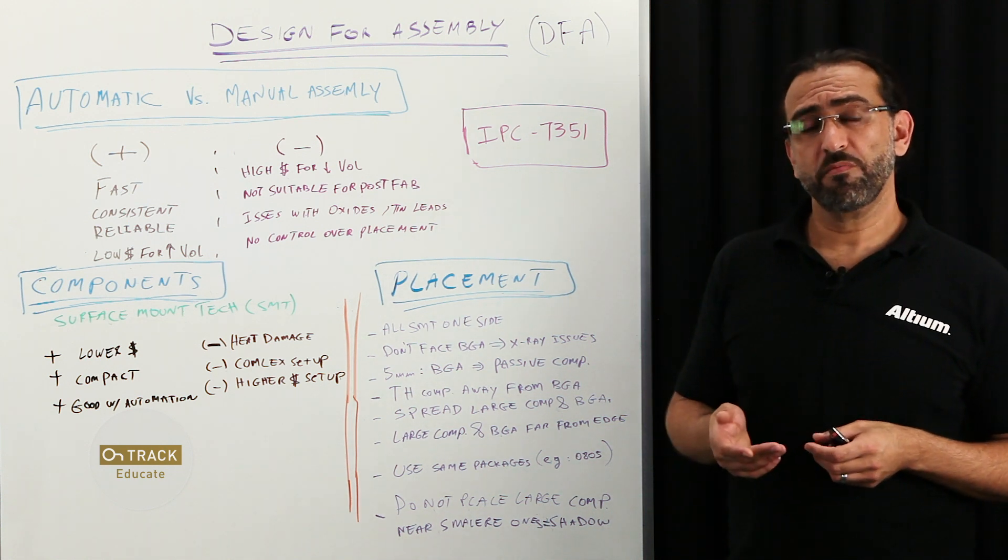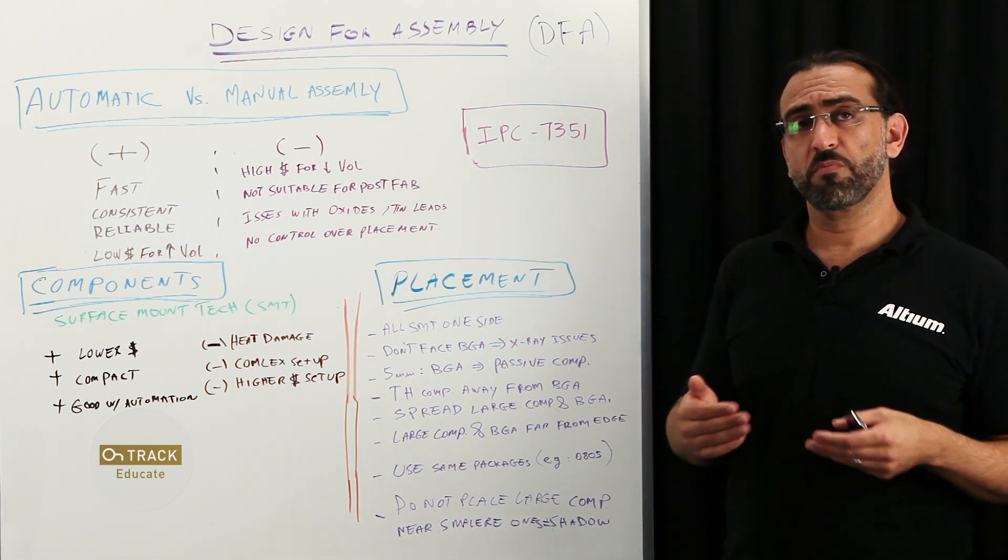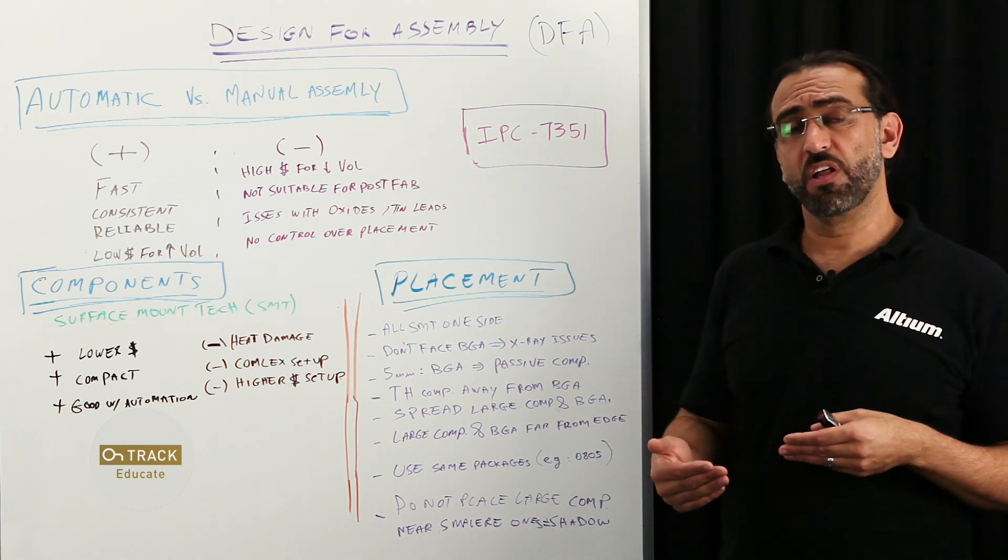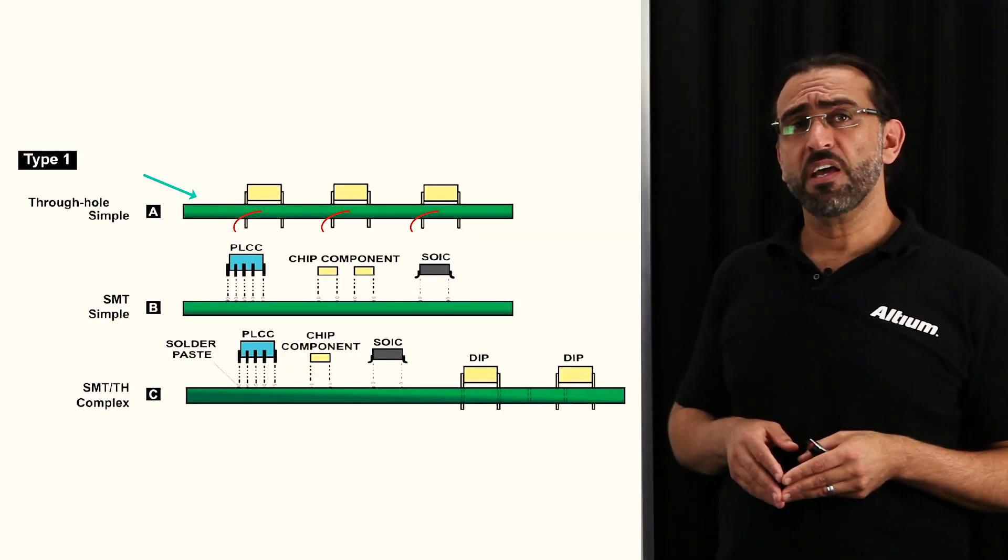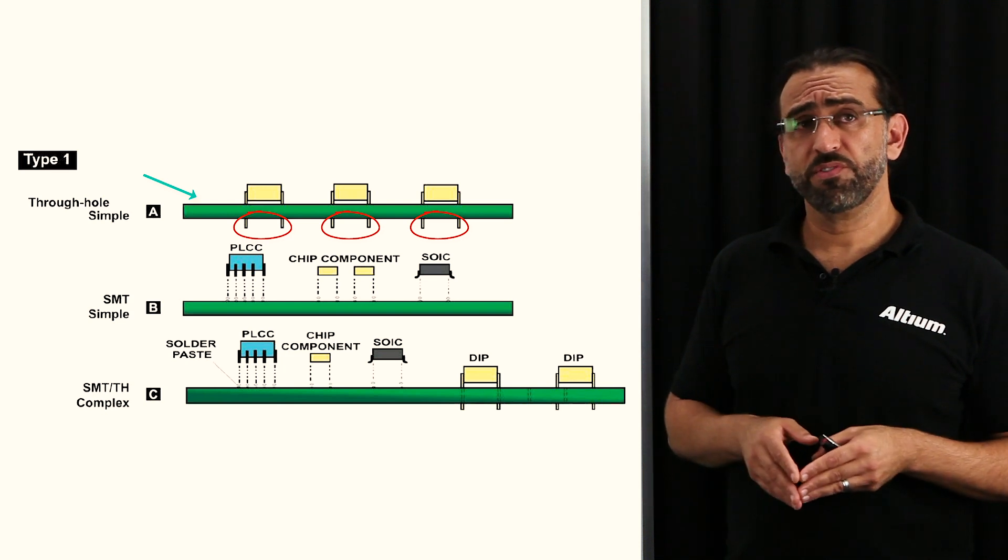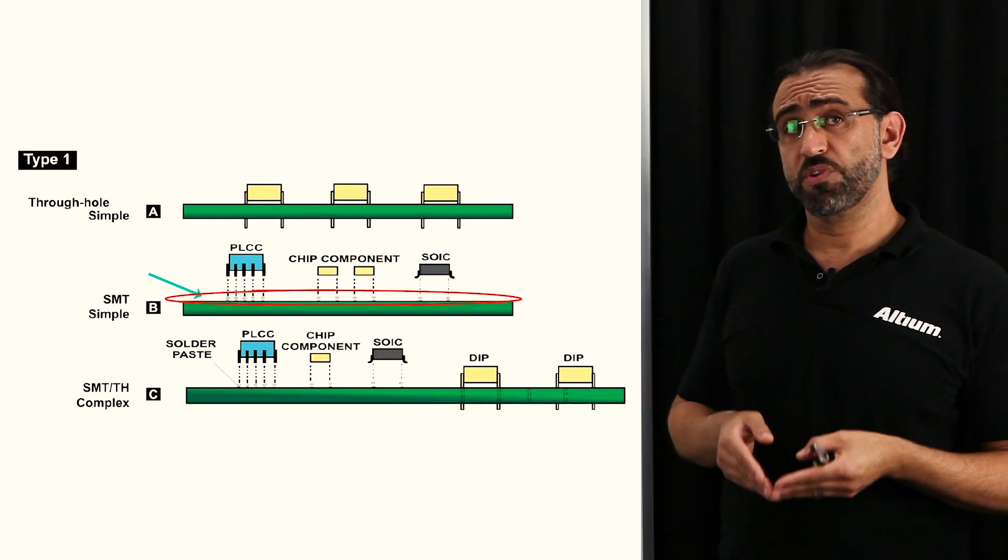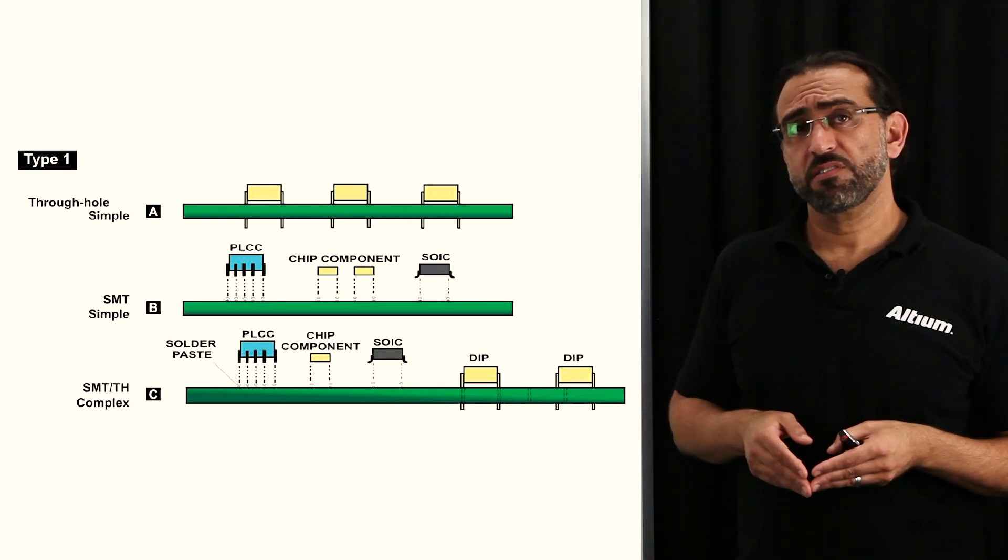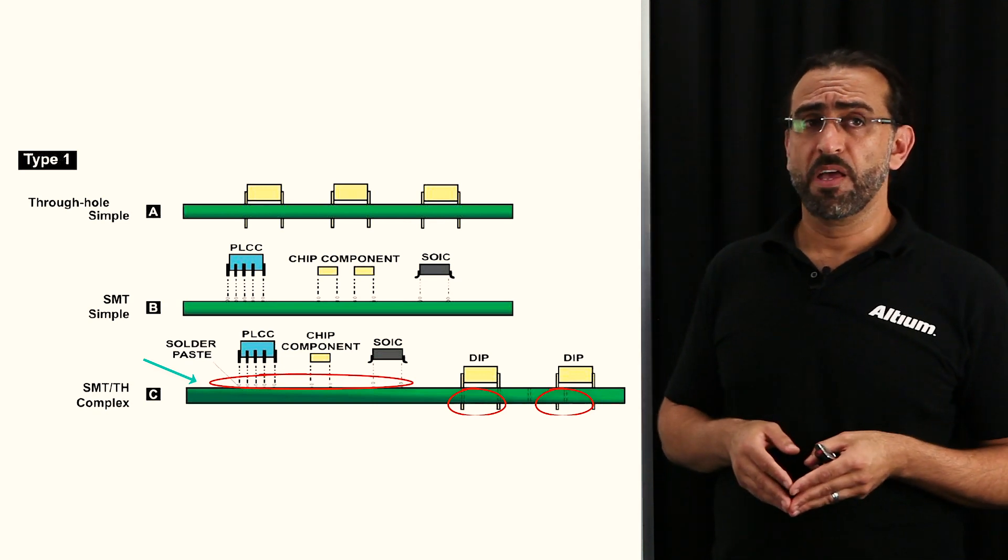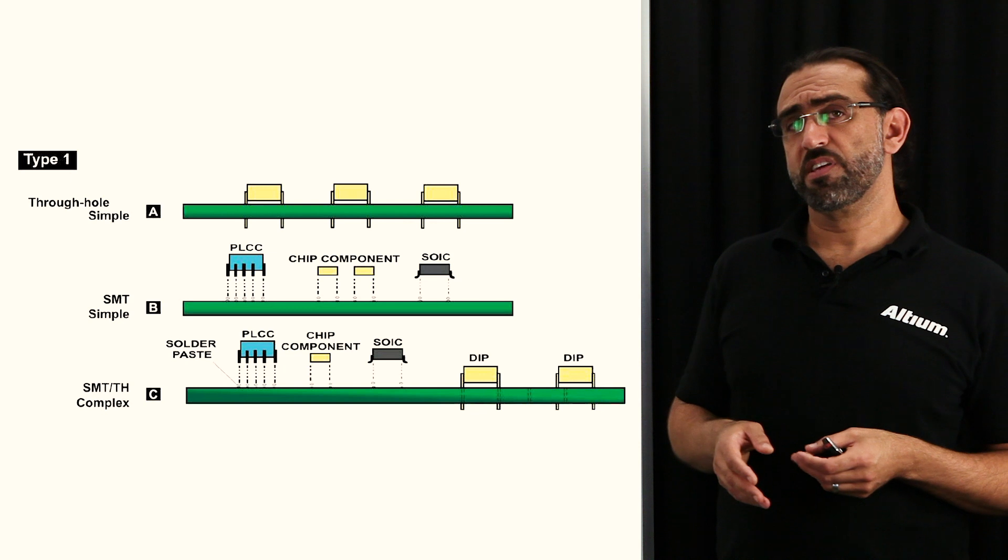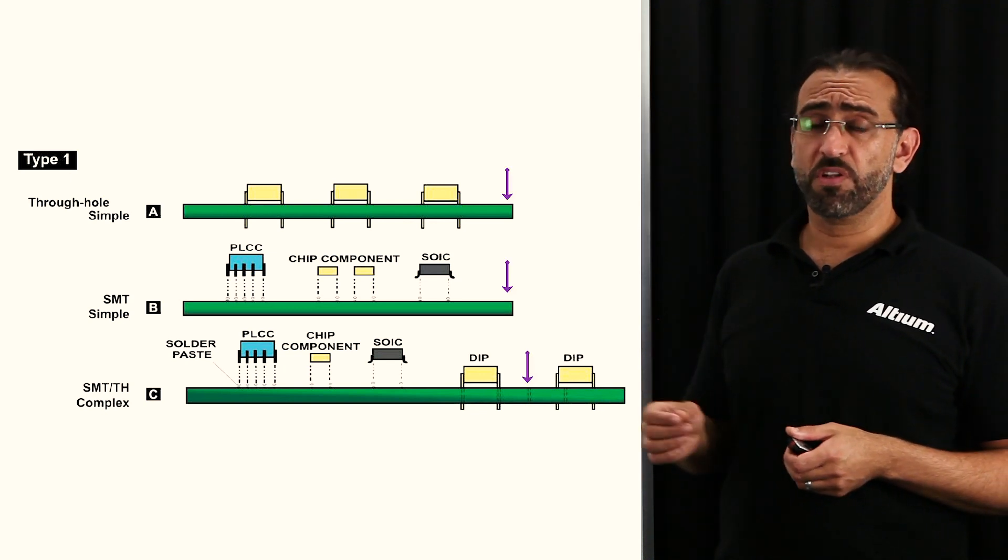So let's go through these images so we can show you the recommended and the possible scenarios where you might have only one type of technology or mixed. So we can see here, the one that is labeled A is an example of a through hole component. And here, the one labeled B is an example of a PCB with surface mount components only. And the one labeled C is an example of a board with mixed technologies, both through hole and surface mount. And all of these boards, as you can see, have one thing in common, that all the components have been installed on one side of the board.